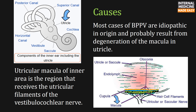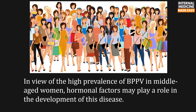Most cases are idiopathic in origin and probably result from degeneration of the macula in the utricle. The utricular macula of the inner ear is the region that receives the utricular filaments of the vestibulocochlear nerve. In the right-sided image, you can see otoconia, which are dislodged when macular degeneration occurs. In view of the high prevalence of benign paroxysmal positional vertigo in middle-aged women, hormonal factors may play a role in the development of this disease.